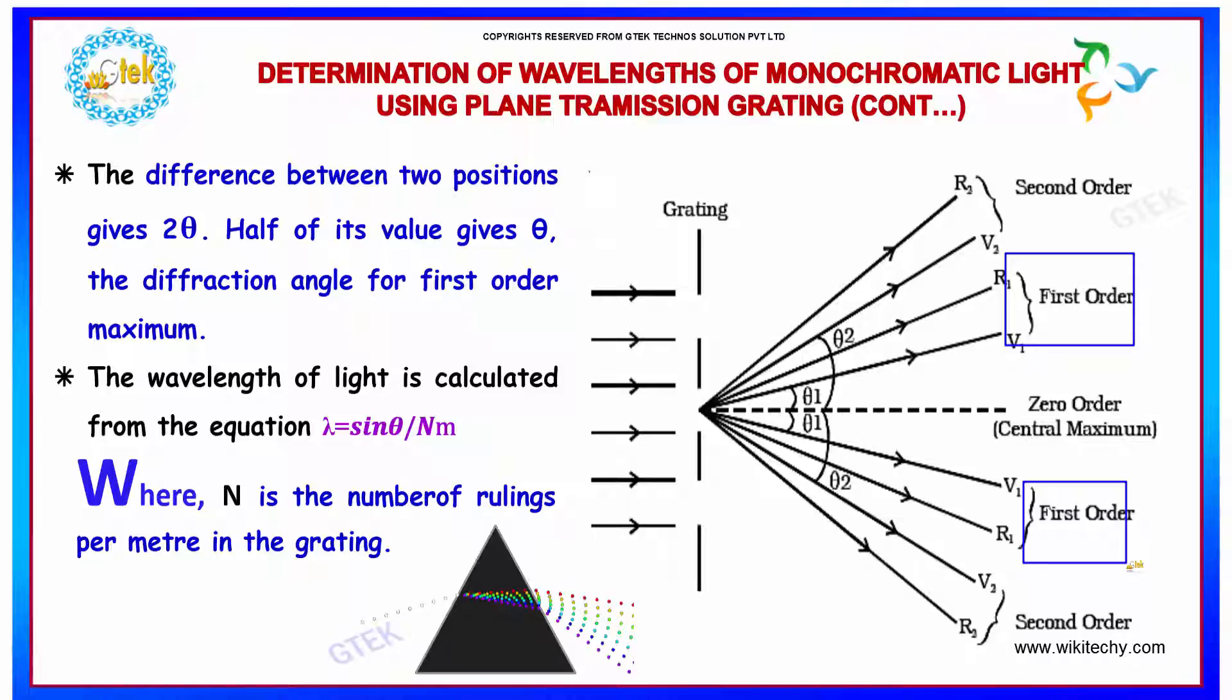The wavelength of light is calculated from the equation lambda equals sin theta divided by n times m, where n is the number of rulings per meter in the grating.